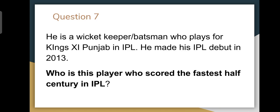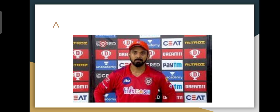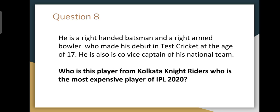Moving on to question number seven — he is a wicket-keeper batsman who plays for Kings XI Punjab in IPL and made his IPL debut in 2013. We were looking for the player who scored the fastest half century in IPL. Who scored the fastest half century in IPL is a straightforward question. The answer is indeed KL Rahul — KL Rahul or Lokesh Rahul is good enough.